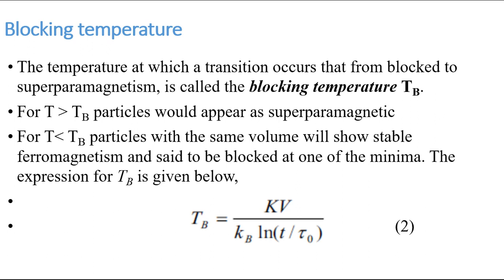We can derive the relation for T_B from the Néel-Arrhenius equation. By substituting T with T_B and taking the natural log, we end up with equation number 2. You can see that T_B is directly proportional to the anisotropic constant of the material and also to the volume of the particle — bigger particles have a higher T_B, smaller particles have a lower T_B. The key parameter to increase T_B toward room temperature is the anisotropic constant, so we need materials with a higher anisotropic constant.